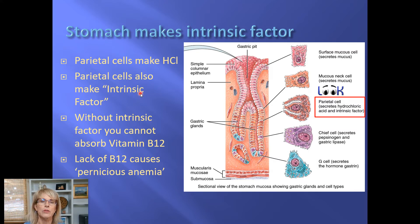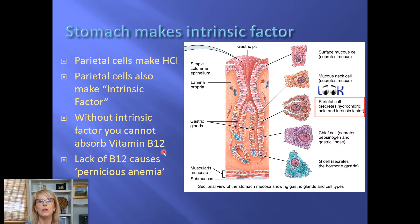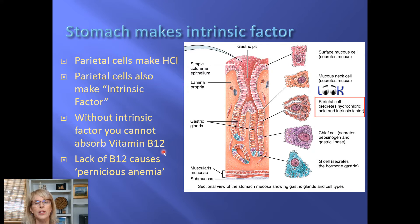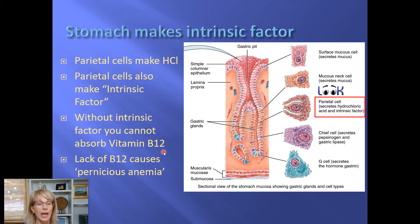Parietal cells also make intrinsic factor. Intrinsic factor is critical for normal health because without intrinsic factor, the vitamin B12 in your diet cannot be absorbed into your bloodstream. Vitamin B12 is different from the other B vitamins in that it is found almost exclusively in animal sources.